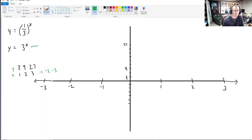What happens when we plug in negative 1 and negative 2 and negative 3? Well, if we make this a negative 1, then we get 1 over 3 to the 1st. That's 1 third. If we plug in negative 2, we get 1 over 3 squared, which is 1 over 9. If we plug in negative 3, we get 1 over 3 cubed, which is 1 over 27.